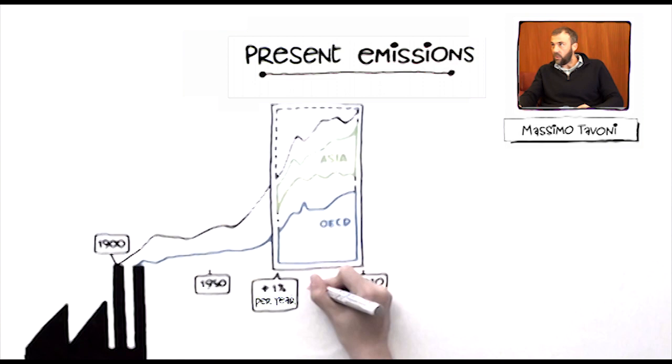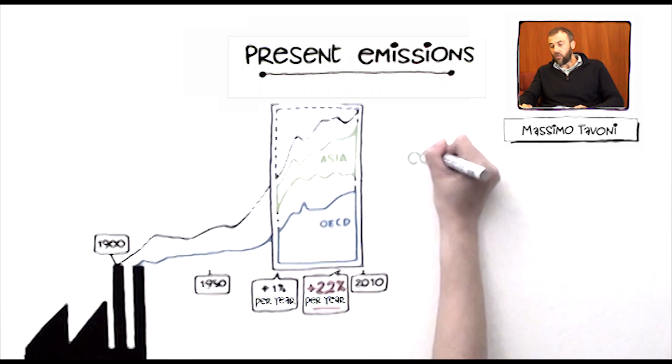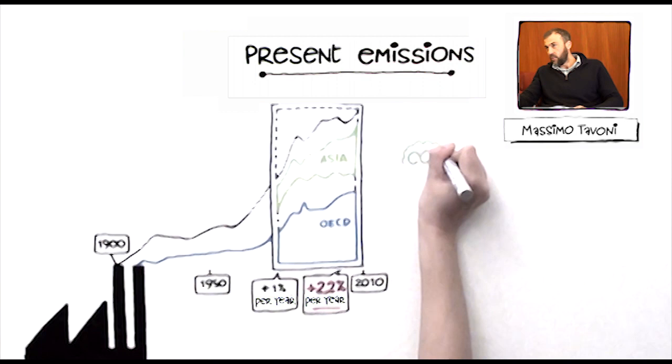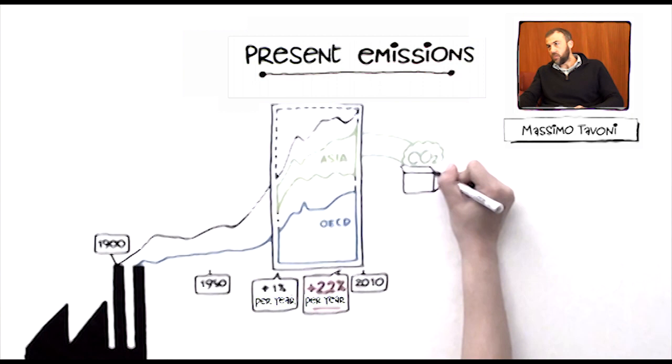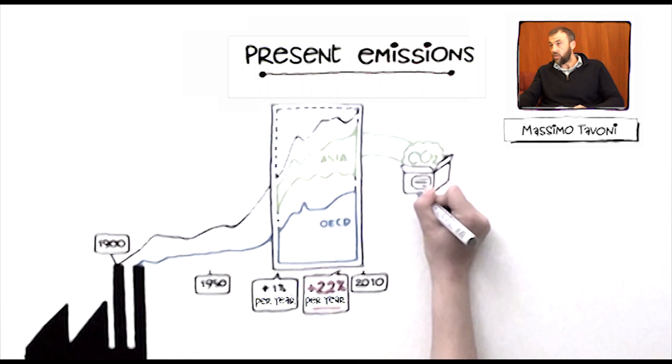A lot of emission growth coming from developing countries can also be attributed to trade of goods, which are sold from developing countries to the developed countries, the industrialized countries. About 20% of emissions are attributed to trade. So 20% of emissions from China, more or less, are actually embedded in the goods that are traded and then sold abroad.